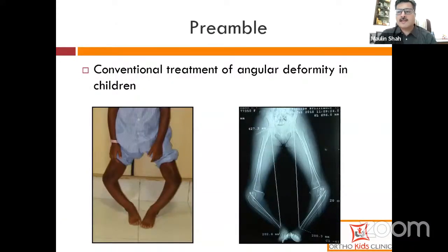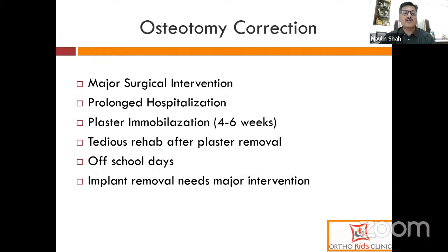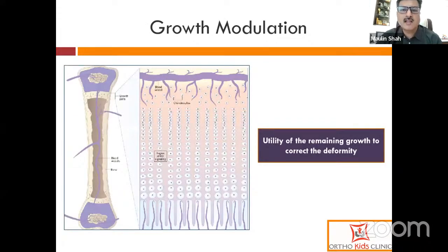We all know that conventional treatment of angular deformity in children needs corrective osteotomies and fixation with implants and plaster immobilization. The drawbacks of this surgical procedure are that it needs a major surgical intervention, there is prolonged hospitalization, plaster immobilization is usually for four to six weeks, and during this time children are off school. Even after plaster removal, they have to undergo tedious rehab and it takes about a month to rejoin school — totally they lose about two to three months. The implant removal after a year or so would also need major intervention. Because of these drawbacks, growth modulation treatment came into picture.